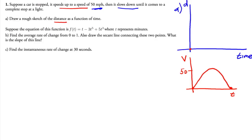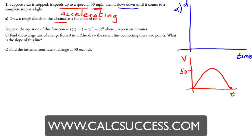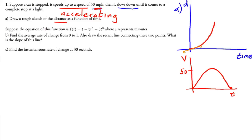When you're speeding up, you're accelerating, meaning your velocity is increasing. This means the distance graph has to be concave up — notice how the slope of the tangent line is increasing. But then at one point it starts slowing down; the distance is still increasing but now the graph is concave down. When it comes to a complete stop, time keeps moving but the distance doesn't change, so the graph becomes flat.